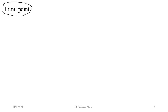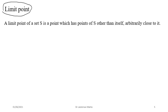An informal definition of limit point: a limit point of a set S is a specific point which has points of S other than the point itself arbitrarily close to it. If a is a point and there is a set S, then a is a limit point of S if you can always find some point of S very near to a — at least one, possibly infinitely many. That is the concept of limit point.